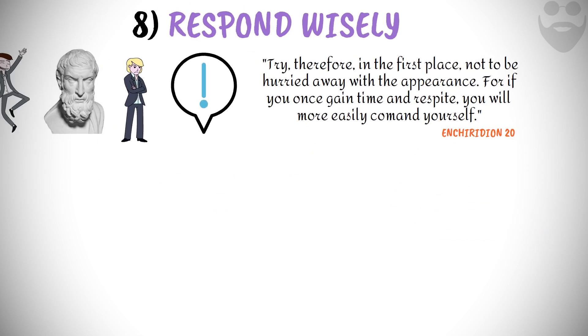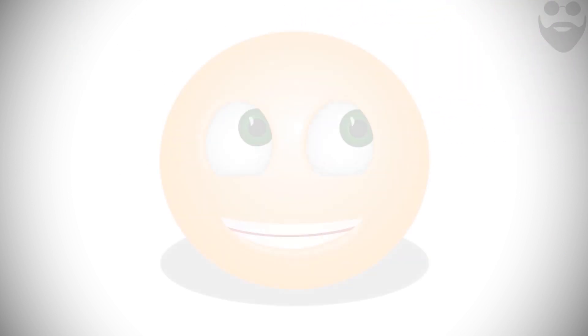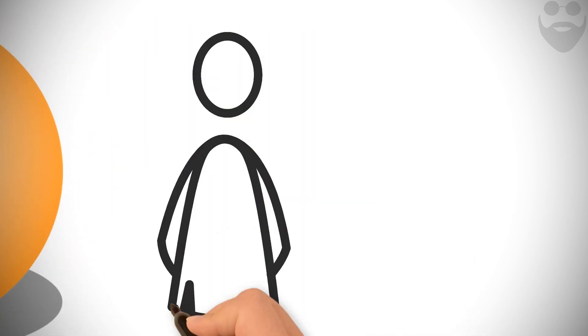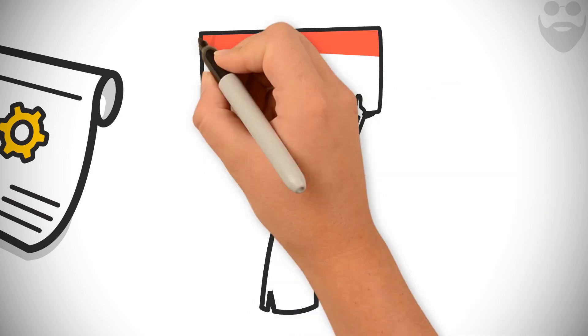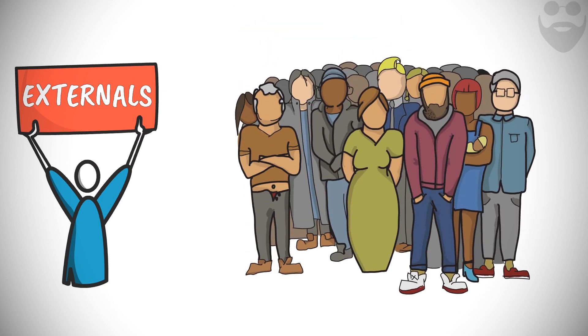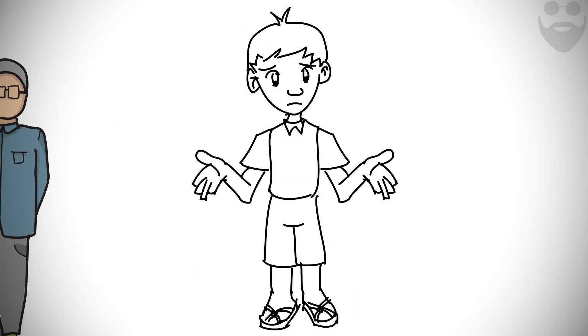9. Don't try to please others. Don't waste your energies to please others. Rather, proactively do what's in your control while sticking to your principles. Because, if you ever happen to turn your attention to externals so as to wish to please anyone, be assured that you have ruined your scheme of life. Enchiridion 23.